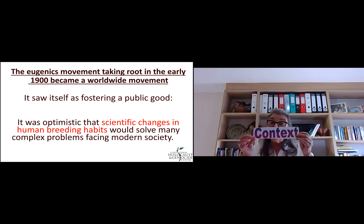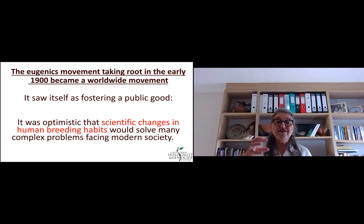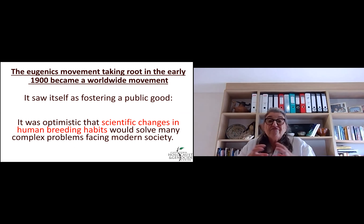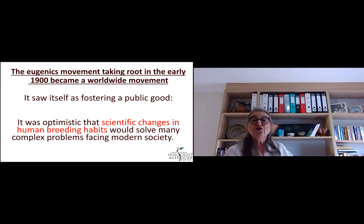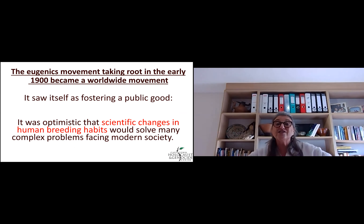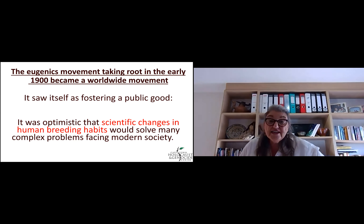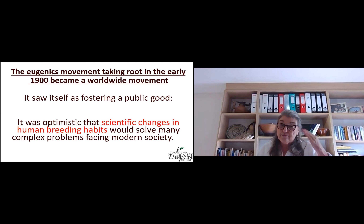Grade 11s, I always talk to you about context. What's happening is you've got the industrial revolution. If I'm talking about England, people coming into the cities — it became very crowded, people got ill, there was crime, there was disease. The eugenics movement is not in one place. It's not only in Europe — it's worldwide. And it sees itself as doing good. It's optimistic that scientific changes in breeding habits would solve many complex problems.